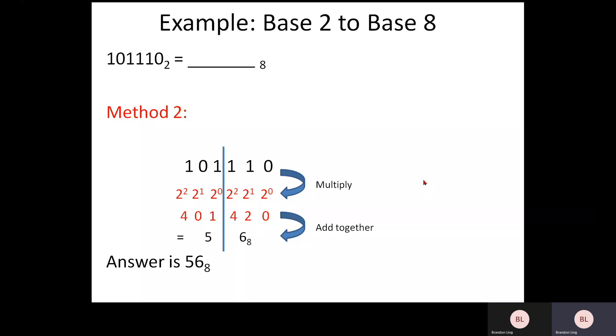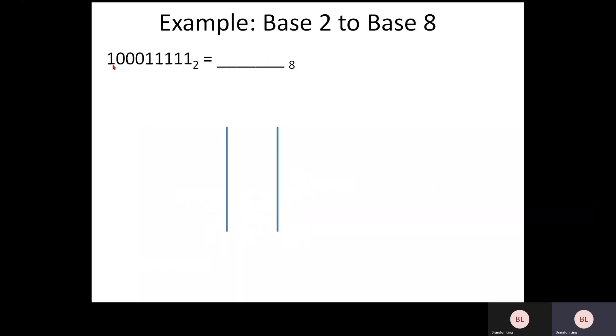So let's try another example. Here, I have 10001111. Okay, so every three numbers, you separate them, starting from your single digit on your right side. So 1, 2, 3, 1, 2, 3.